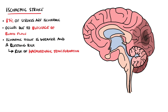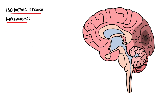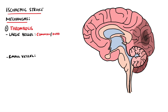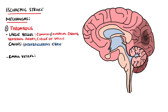There are four main mechanisms for an ischemic stroke. The first is thrombosis, which is divided into large and small vessel disease. Large vessel disease involves the common and internal carotids, the vertebral arteries, and the circle of Willis. The main causes of thrombi here include atherosclerosis, vasoconstriction, dissection, and vasculitis.